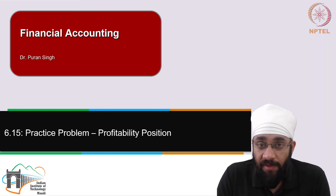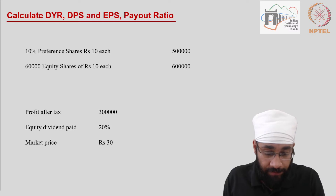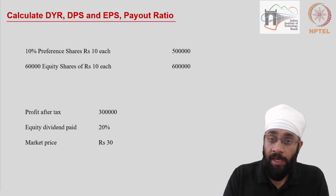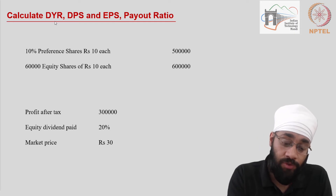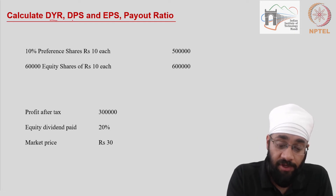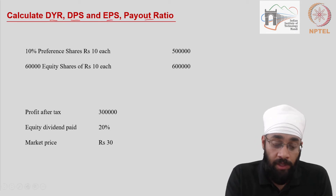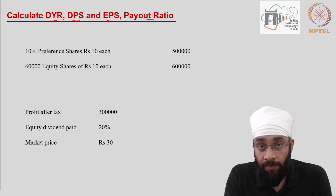Let's look at another practice problem in profitability ratios. We have been given some numbers and we are going to calculate a set of ratios: dividend yield ratio, dividend per share, earnings per share, and payout ratio. Let's look at the contents on the slide one by one, understand these, and then calculate the ratios.